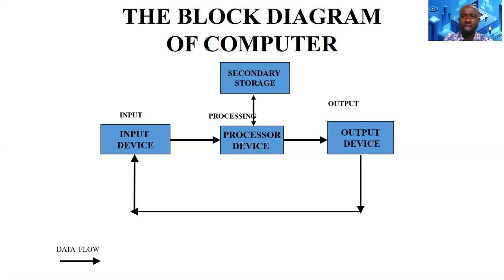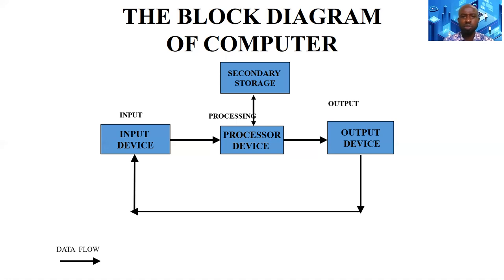The device used at the output stage is the output device. The most popular examples are the monitor, the plotter, the projector, the speaker, the printer, and others. The device used for storage of data is called the storage device or secondary storage devices. Examples include pen drives, floppy disk drives, disk drives, and others.